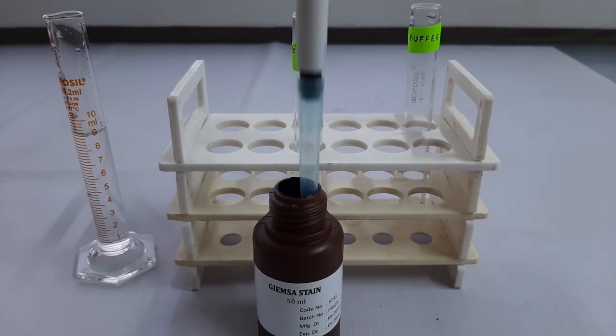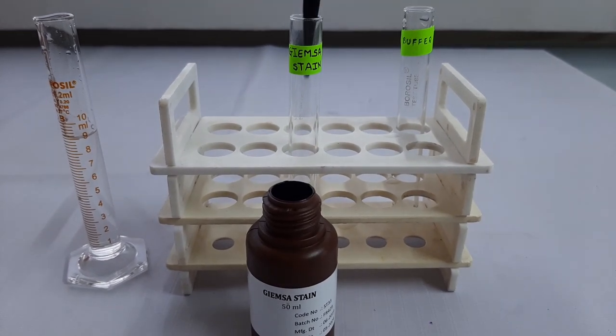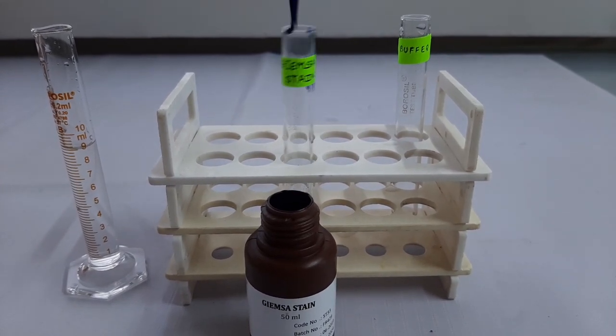We will take 1 ml of Giemsa stain and then add it to a second tube where we have previously labeled for the Giemsa stain.